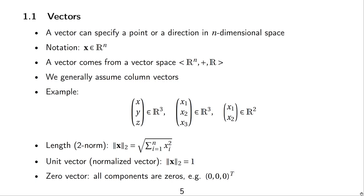The length of a vector, also called the 2-norm, is denoted with double bars and subscript 2. It is computed by summing up the square of each entry of the vector and then taking the square root of the complete sum. We call a unit vector a vector whose length — i.e., 2-norm — is 1. A zero vector is the vector whose components are all zeros, for example (0, 0, 0) transpose.